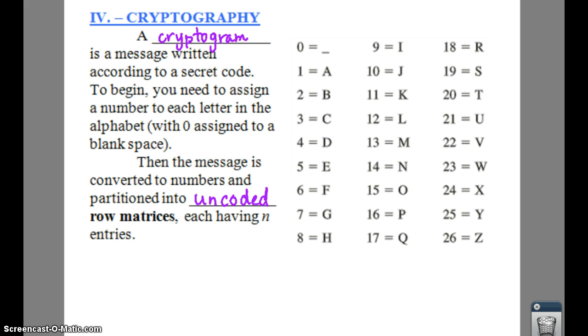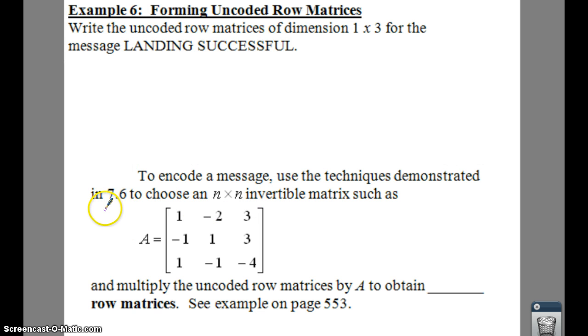So let's look at our example 6 here, and what we're going to do is form uncoded row matrices of dimension 1 by 3. So that means we're going to have a lot of 1 by 3 matrices, one row, three columns, for LANDING SUCCESSFUL.